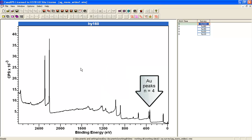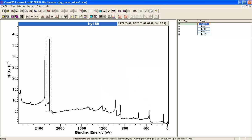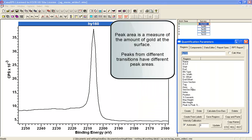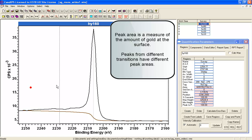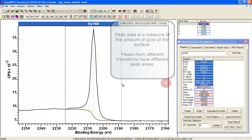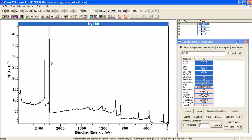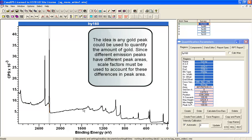For XPS, the idea is that you should be able to choose a peak and create a quantification region, and then scale the intensity from this particular peak so that no matter which of these peaks I had chosen, the scaled intensity would be a measure of how much gold is in the surface.